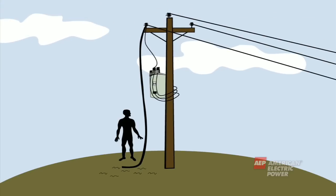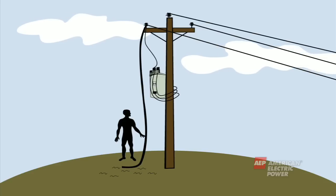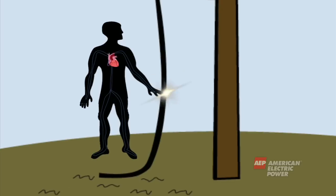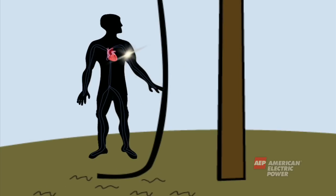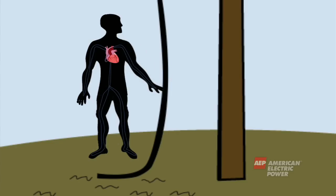The human body is a very good conductor of electricity because it is made mostly of water, which is a conductor. If you were to touch a wire that had electricity running through it, the electricity would use your body as a quick path to the earth. As you can imagine, electricity running through your body can cause severe injury and even death.